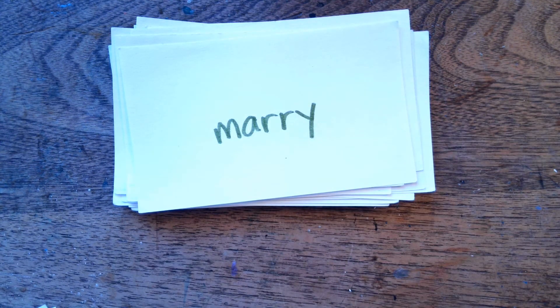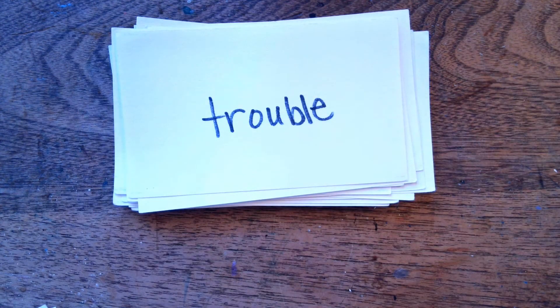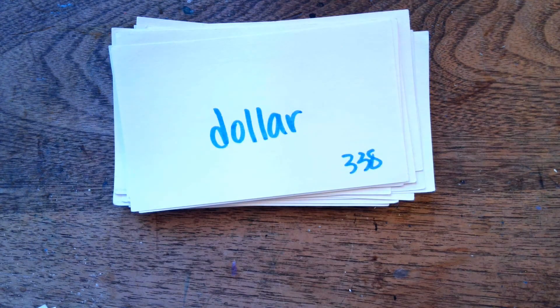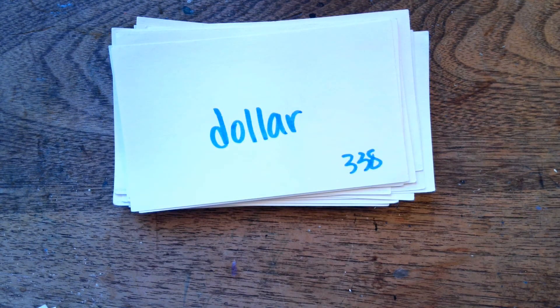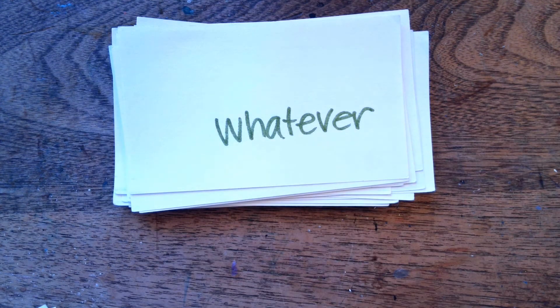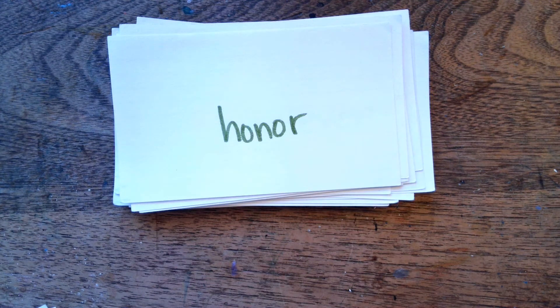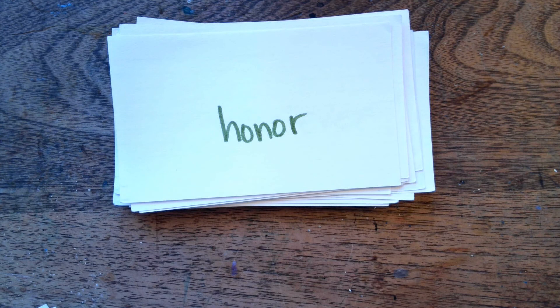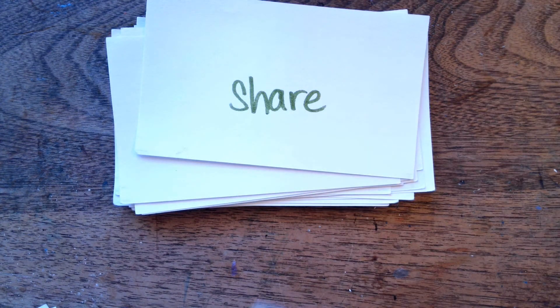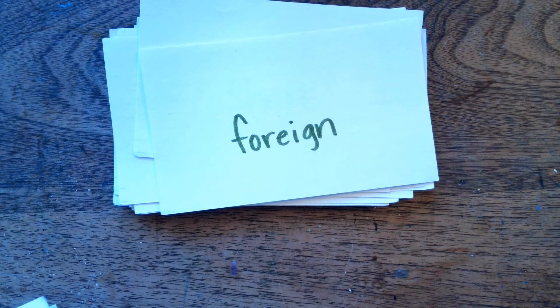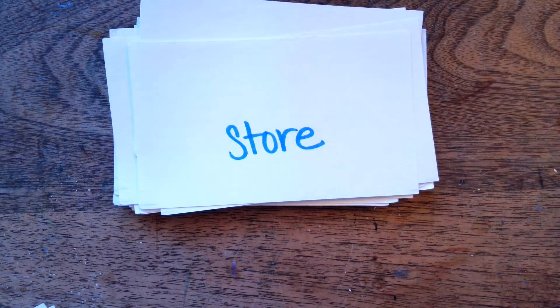This one is a sight word — discuss. Did you discuss that? This one is a sight word — marry. Did you marry him? Next one is a sight word — trouble. Sight word — dollar. It almost makes sense. Sight word — whatever. Sight word — honor. Sight word — share. Sight word — foreign. Like someone that comes from a different country — a foreign country. It's not the country that you're in.